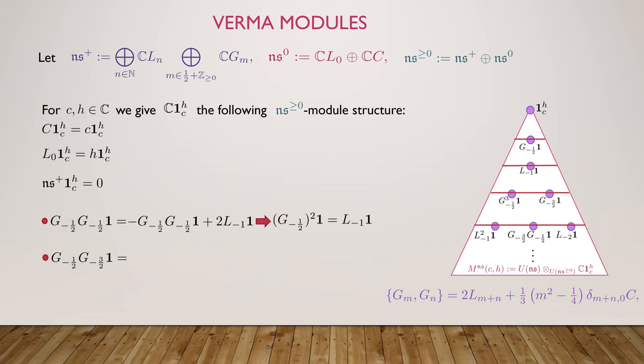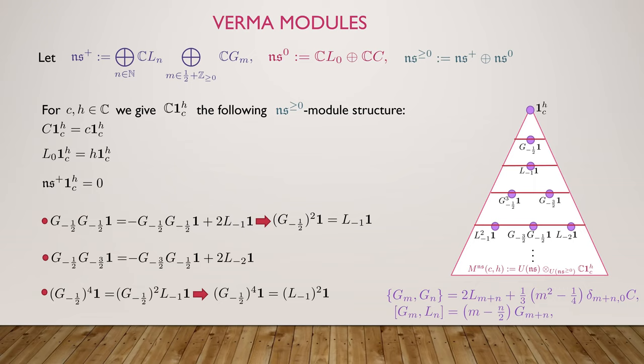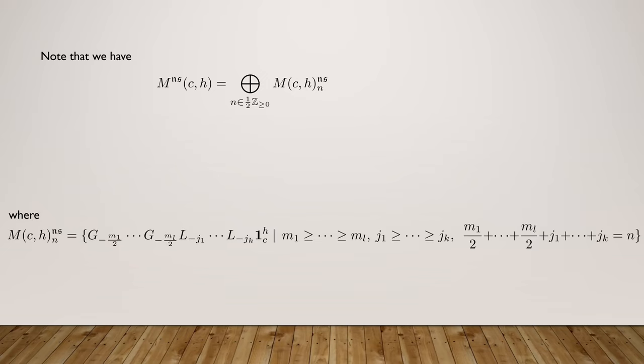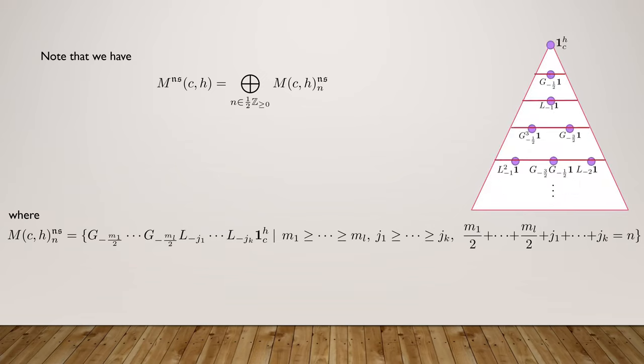Analogously, if elements appear in the wrong order, we can use the anti-commutator to reorder them. And G_{-1/2} to the fourth is G_{-1/2} squared times L_{-1}, but we can use the relation between G's and L's to move G_{-1/2} closer to the lowest weight vector and show it's really L_{-1} squared. So we have a nice grading on these Verma modules for the N equals 1 super Virasoro algebra, where degree zero, one-half, one, three-halves, etc., is well defined.